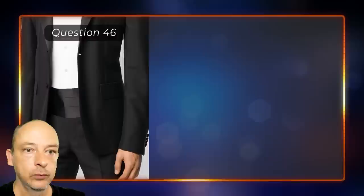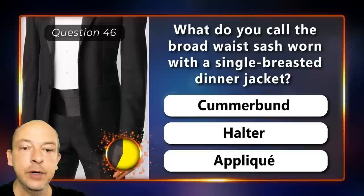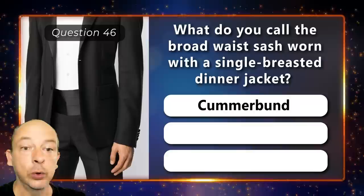What do you call the brown waist sash worn with a single-breasted dinner jacket — a cummerbund, a halter, or an appliqué? It's called a cummerbund.